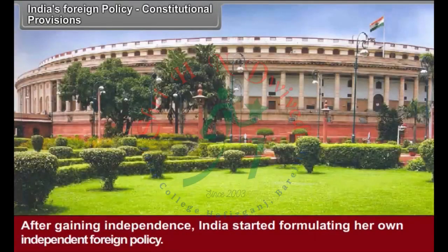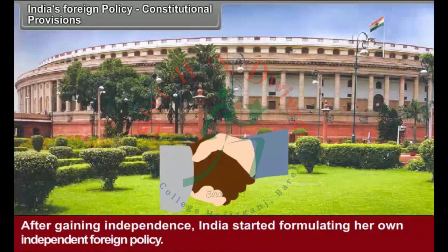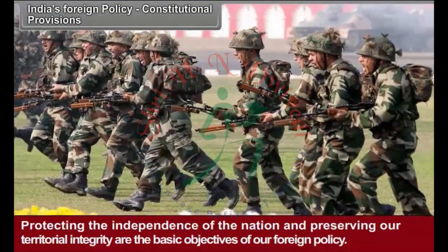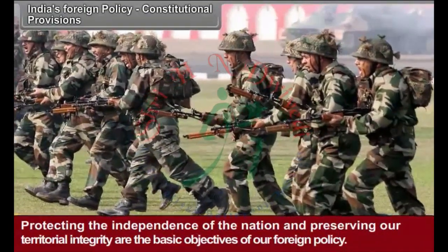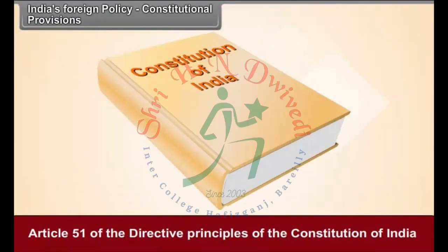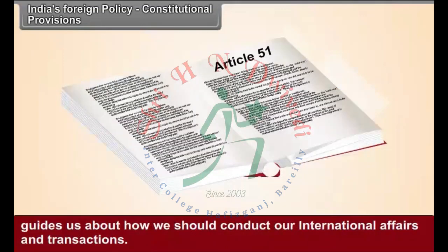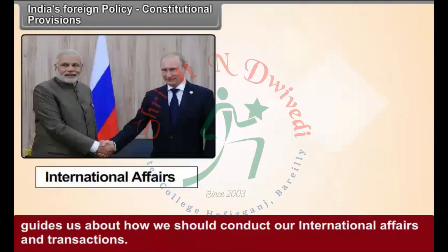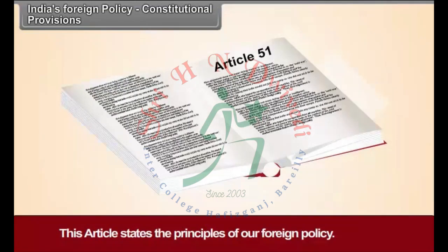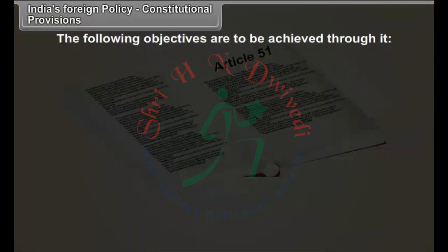After gaining independence, India started formulating her own independent foreign policy. Protecting the independence of the nation and preserving our territorial integrity are the basic objectives of our foreign policy. Article 51 of the Directive Principles of the Constitution of India guides us about how we should conduct our international affairs and transactions. This article states the principles of our foreign policy, and the following objectives are to be achieved through it.